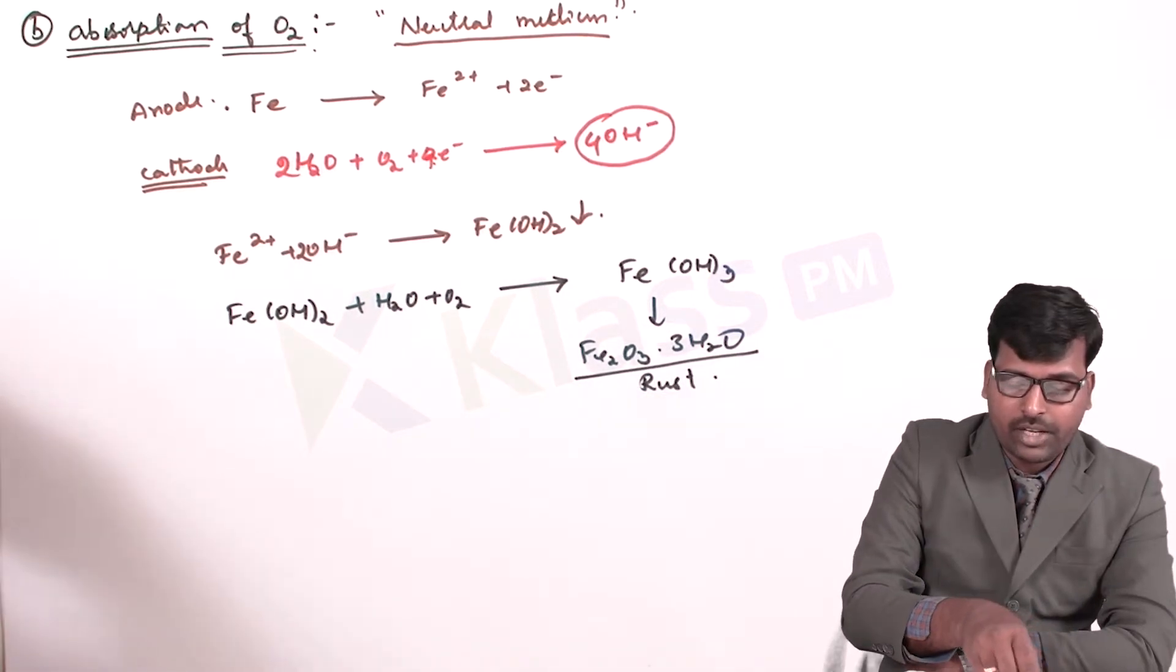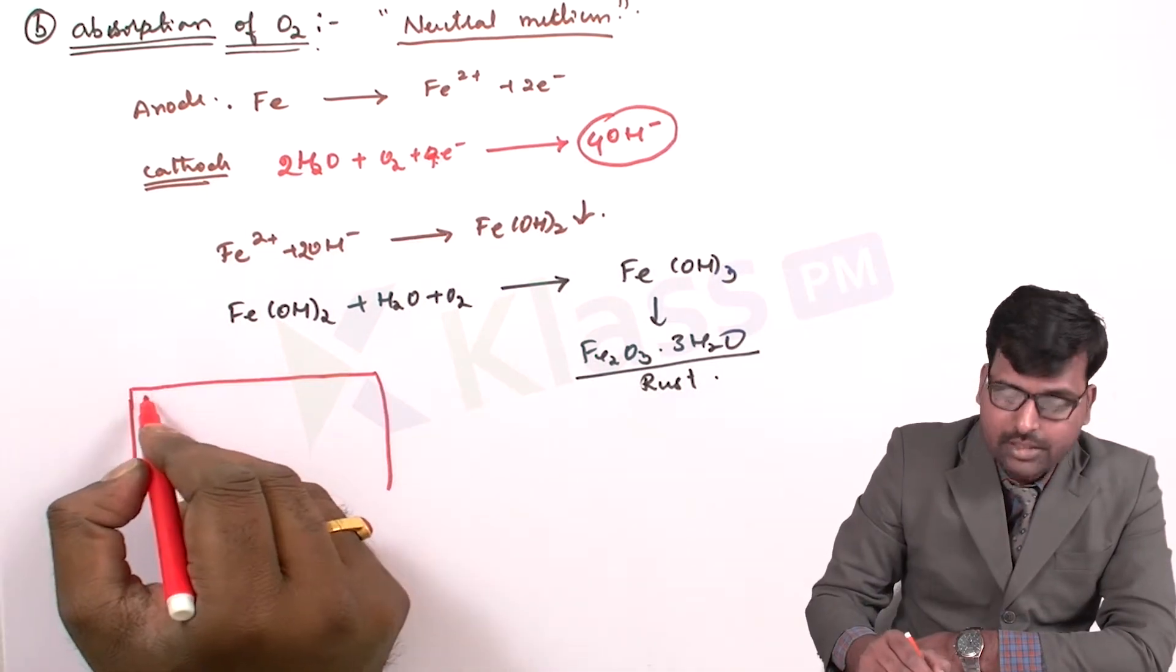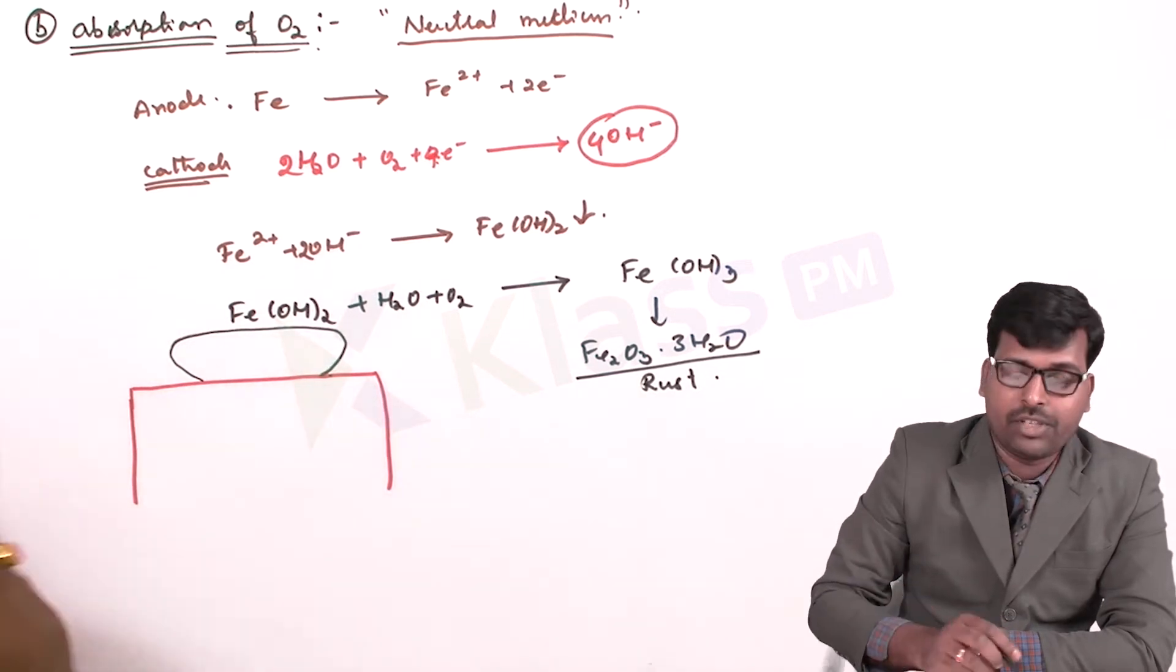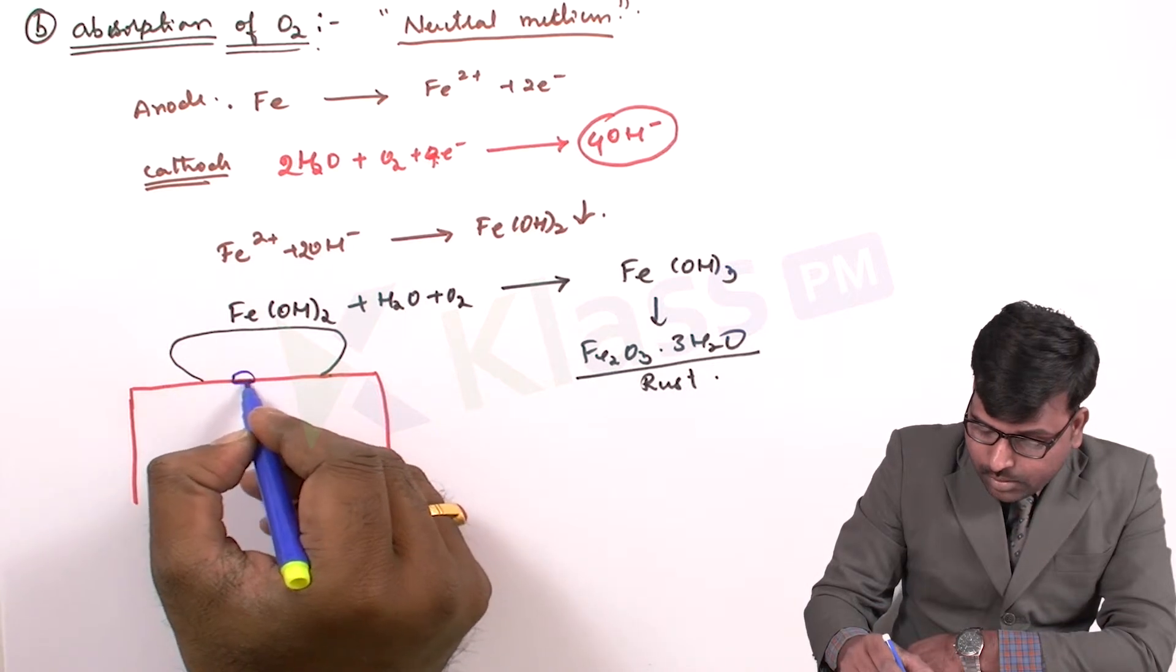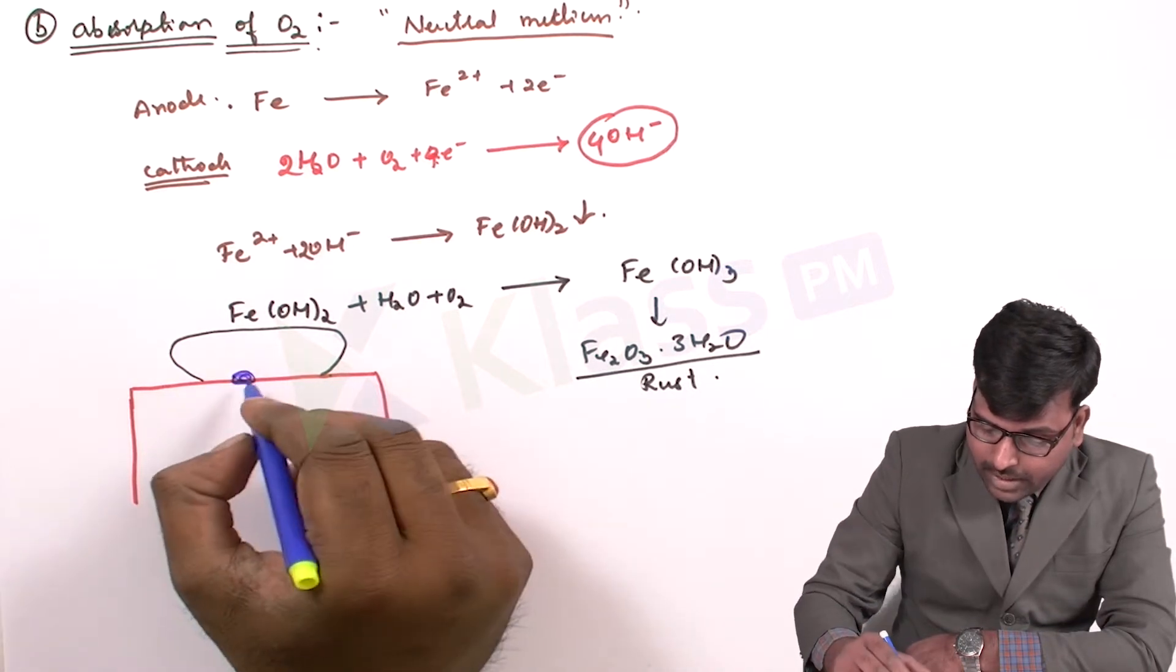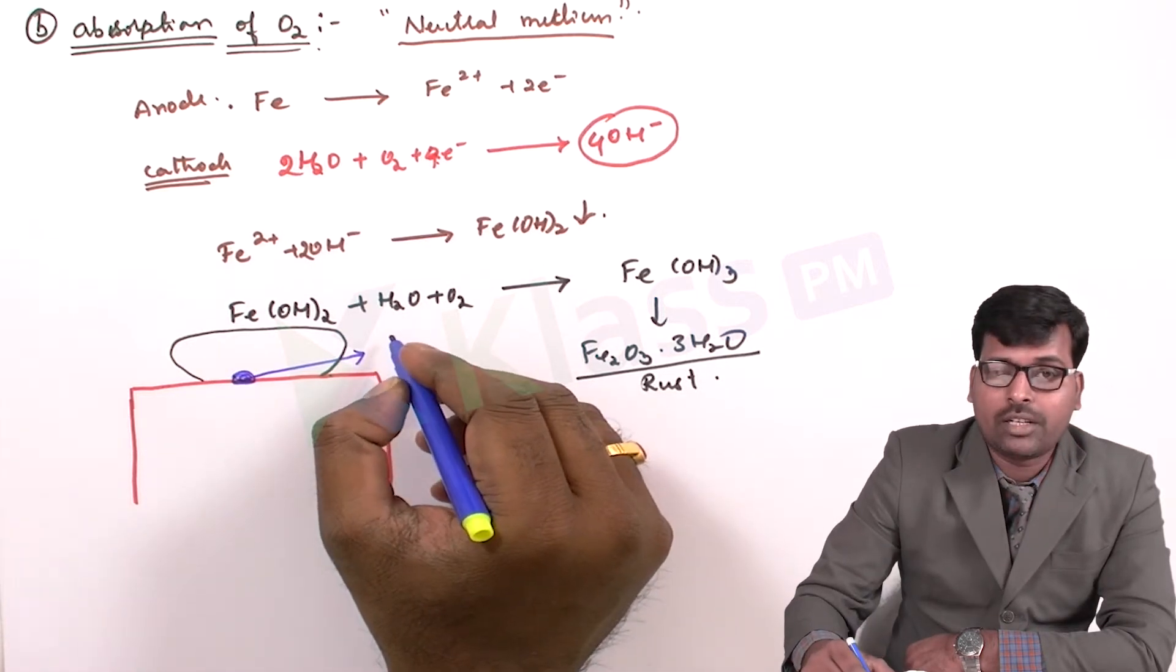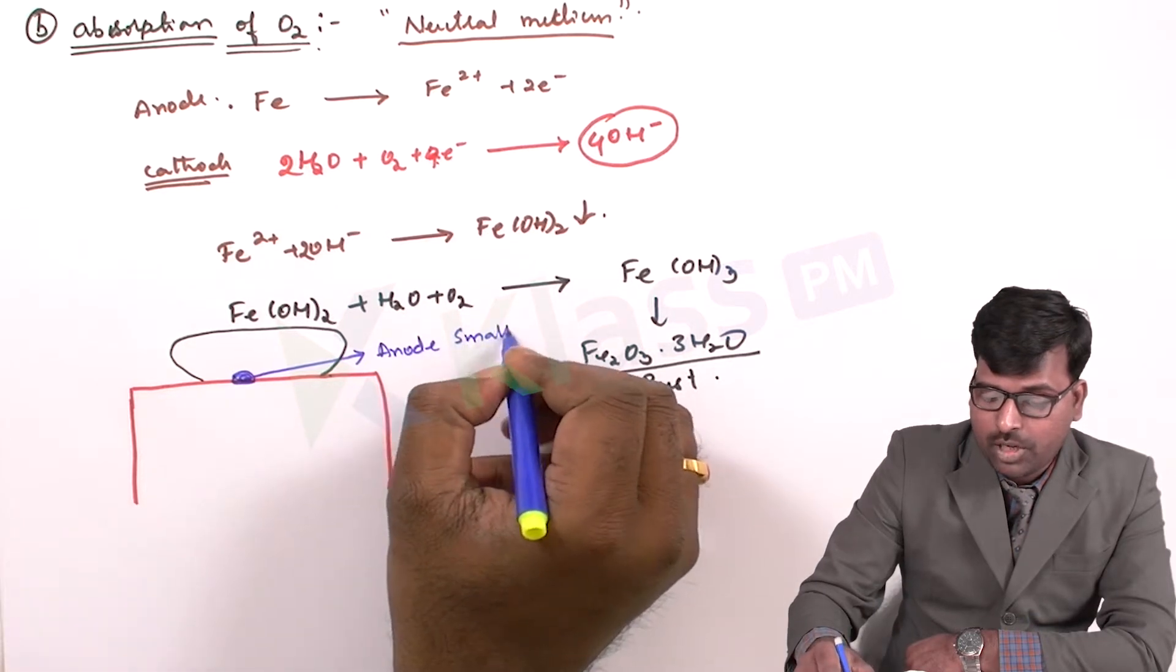Pictorially we can represent this and it will go like this. Let's take this is the metal surface. And this is the surrounding environment which is causing the corrosion. And the area here would be the anodic area. Remember, in case of absorption of oxygen type of mechanism, anode will be smaller.